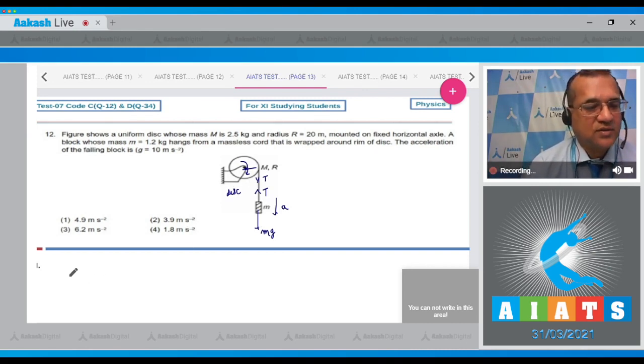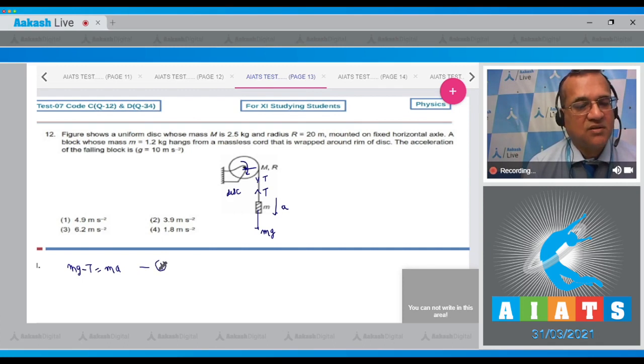So for the block, the equation will be mg minus t equals m into a, the acceleration with which it will come down.